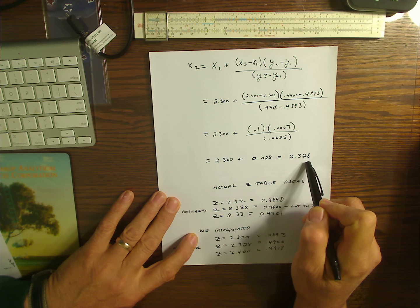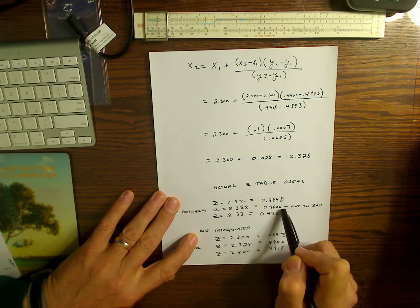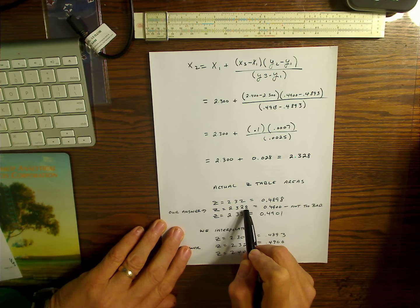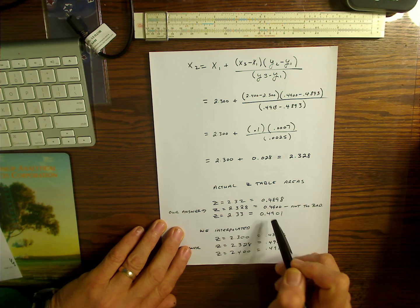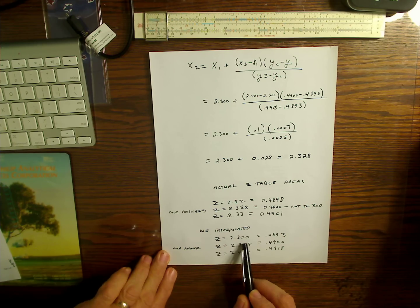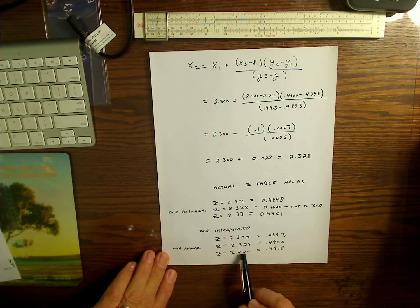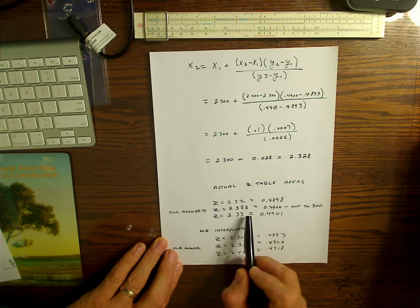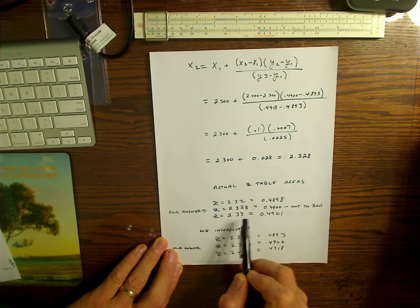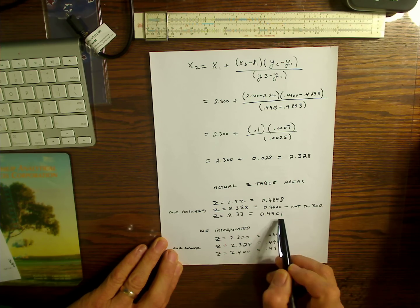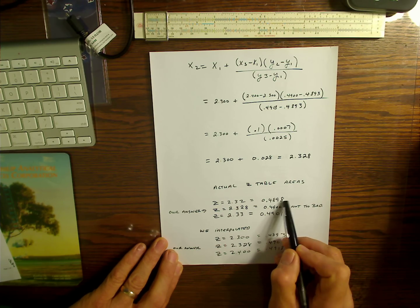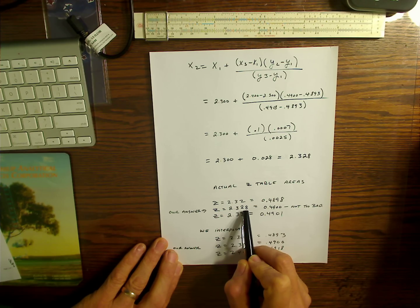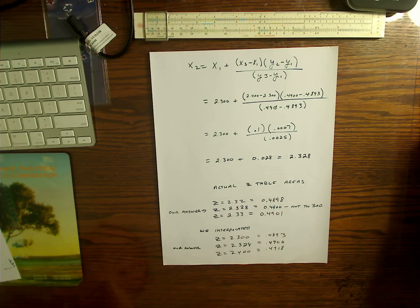We can say that our area of 0.4900 has a Z value of 2.333. Now this is an estimate, so let's take a look at some real actual Z table areas to see how close we got. What we started off with was 2.3 and 2.4, and I interpolated between these two numbers and got 2.328. My actual chart has three significant figures so I was able to compare it to something a little bit closer. Looking at the actual chart for 2.33 and 2.34, this takes me a little over 0.4900, and this takes me a little under 0.4900 — and there's the number we derived. Not bad. I hope you enjoyed this video. Good luck with your chemistry.